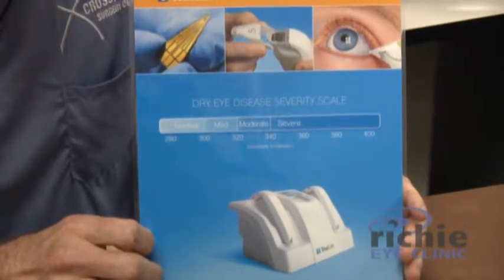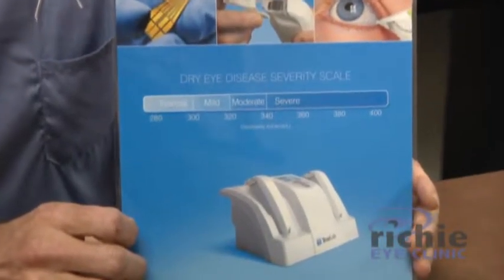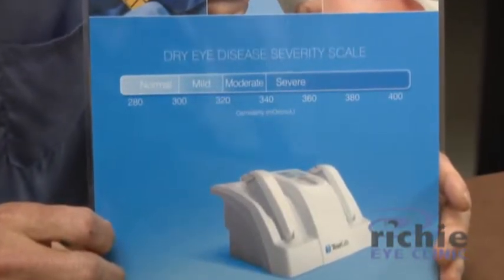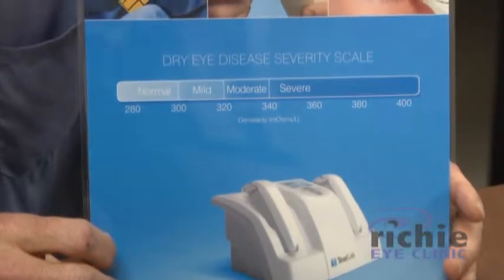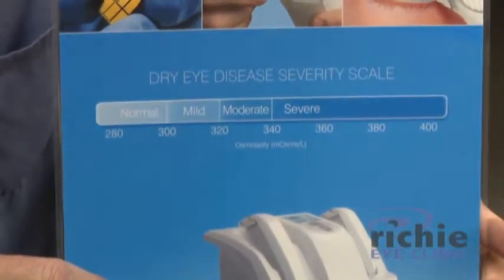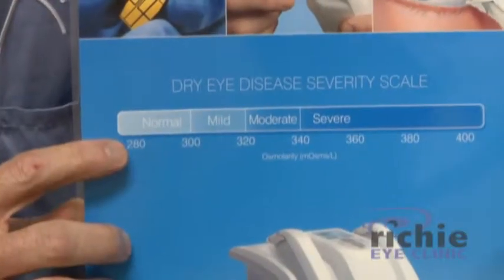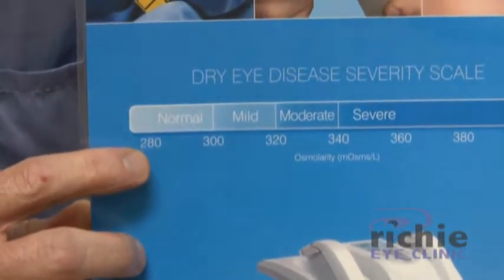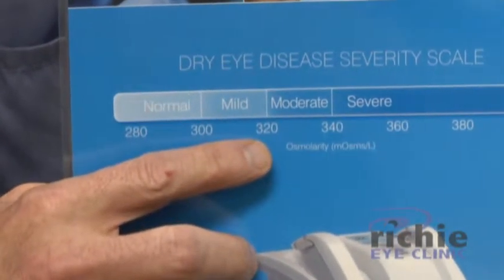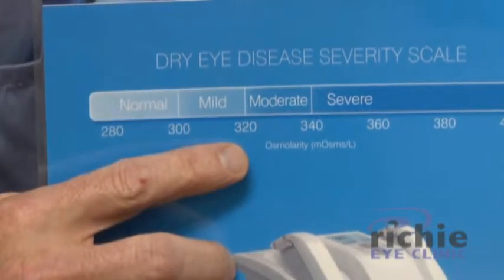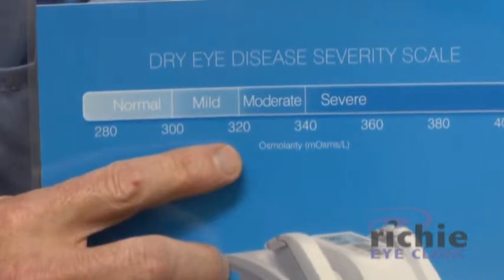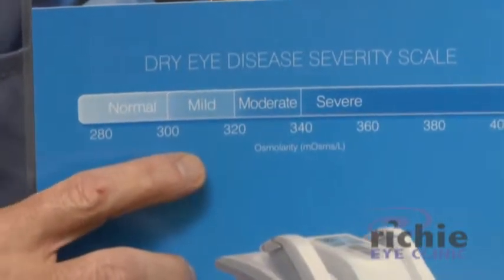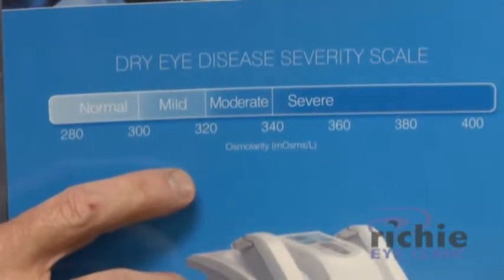We look at this test on a scale — this is the Dry Eye Osmolality Scale, also called the Disease Severity Scale — but what it's really measuring is the saltiness of the tears. Normal is anywhere below 300. For the average person, 280 is going to be a very good score. 300 is very borderline, and as we go up above 320, we're going to have pretty significant dry eye symptoms.